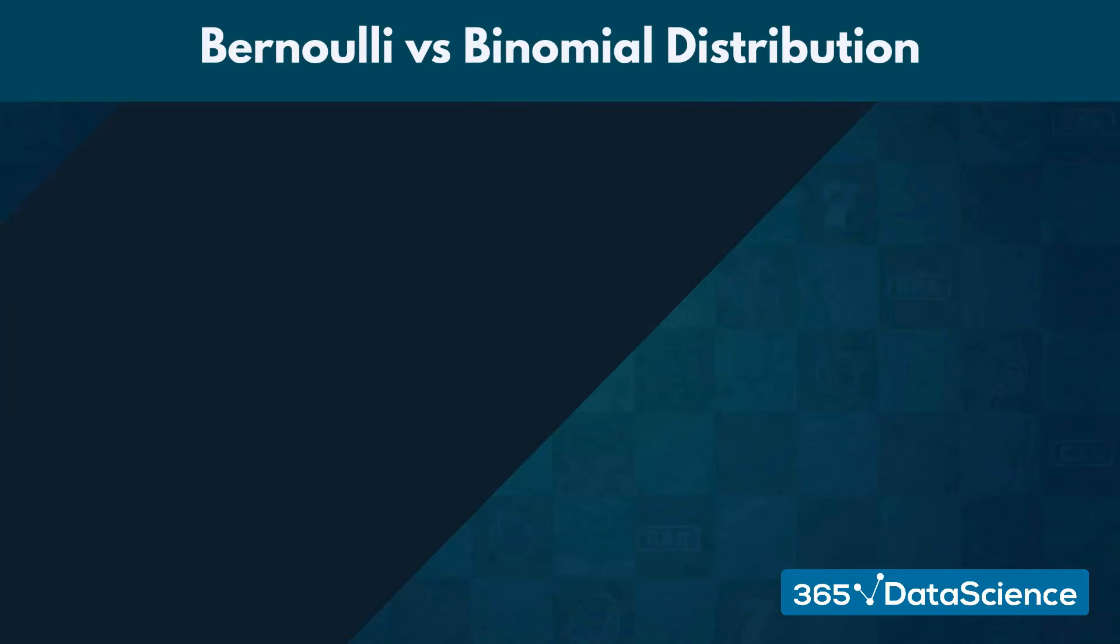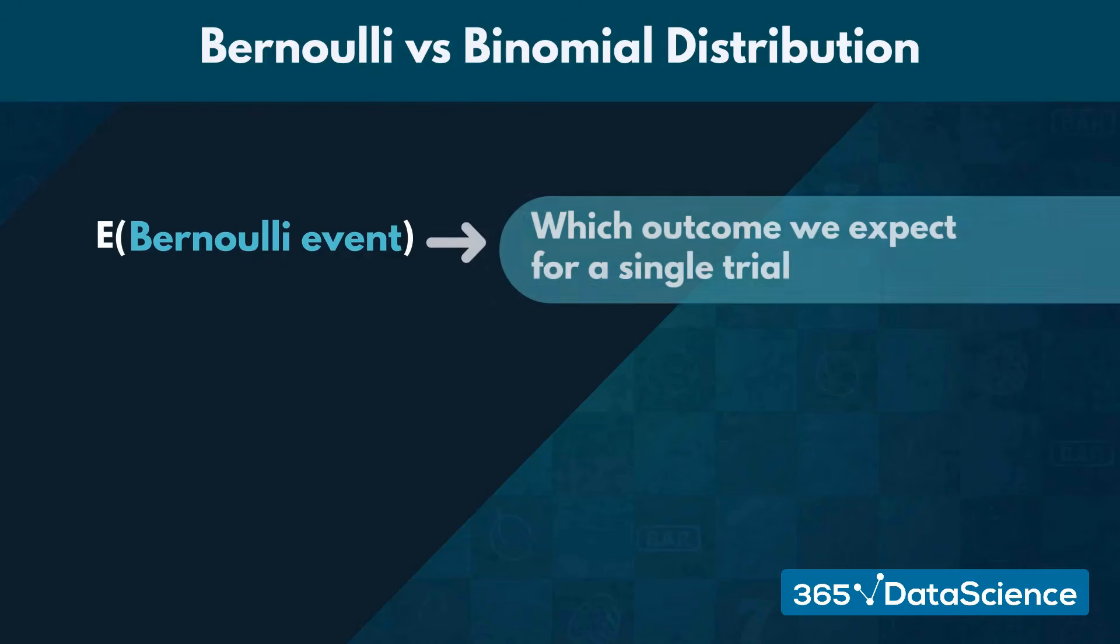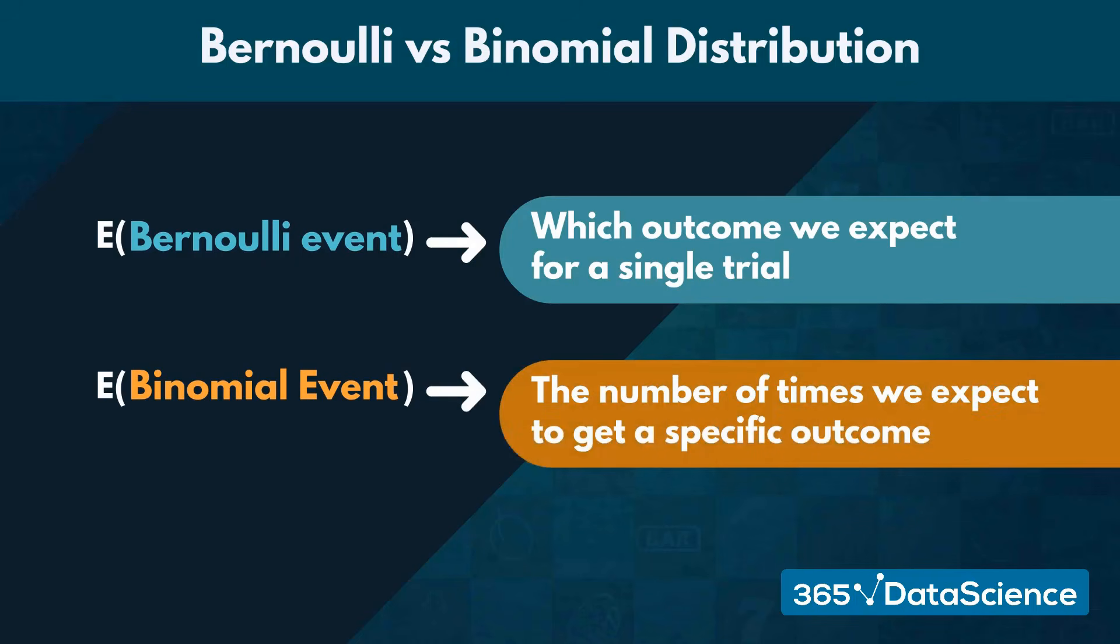Let's go back to the quiz example. The expected value of the Bernoulli distribution suggests which outcome we expect for a single trial. Now, the expected value of the binomial distribution would suggest the number of times we expect to get a specific outcome.